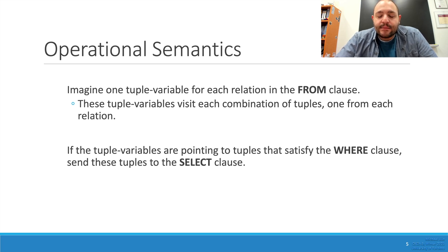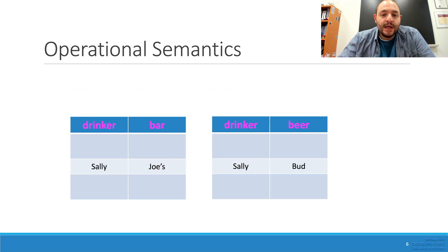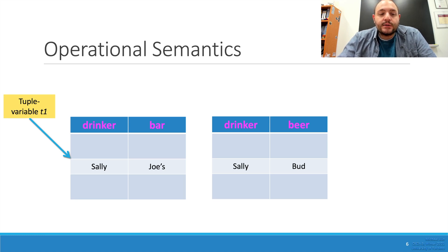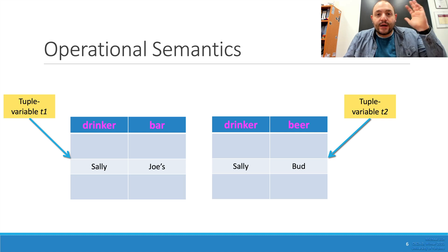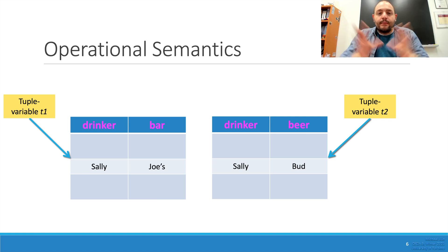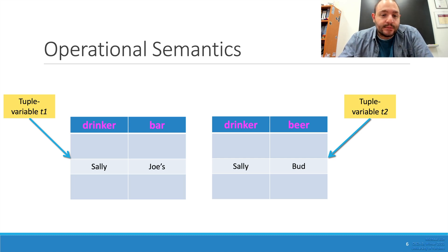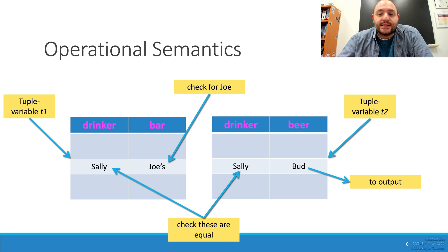Operationally, it's the same thing: you have one tuple variable for each relation in the FROM clause, and they visit combinations of each tuple. For example, with likes and frequents, there's a tuple variable t1 iterating over likes and t2 iterating over frequents. When there's a match, they combine and add that to the subsetted pool. You can think of this as a nested for loop — you perform a check, and when the checks are equal, that's what gets sent to output.